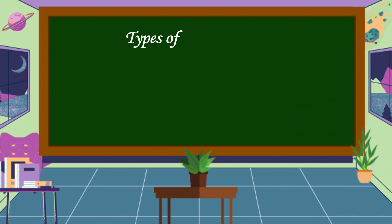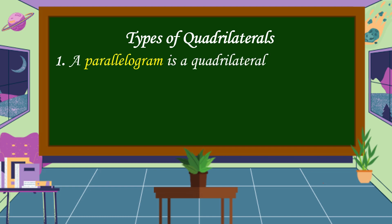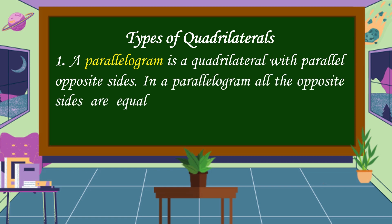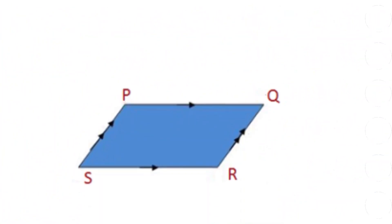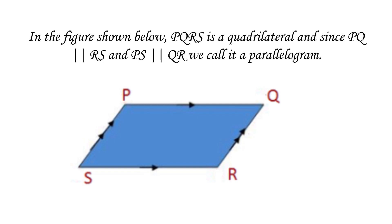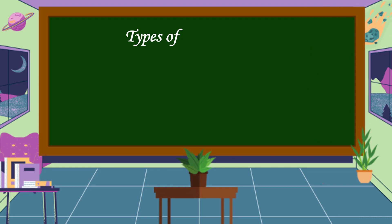Now let's discuss the types of quadrilaterals. We have five types of quadrilaterals. The first type is a parallelogram. A parallelogram is a quadrilateral with parallel opposite sides. In a parallelogram, all the opposite sides are equal, and the angles made by each opposite side are also equal. In the figure shown below, PQRS is a quadrilateral, and since PQ is parallel to RS and PS is parallel to QR, we call it a parallelogram.